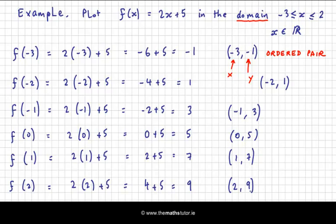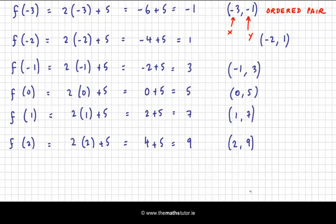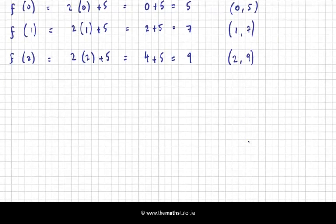So I have all of my ordered pairs and I can now plot my function. Before I draw my axes, it's a good idea to see the range that I have. My x-axis I need to go from minus 3 to 2. And my y-axis I need to go from minus 1 is the lowest number and 9 is the tallest. So that means I'll have to make sure that I have bigger numbers above the x-axis. And I don't need so many below the x-axis.